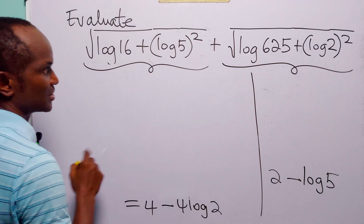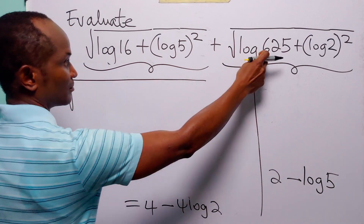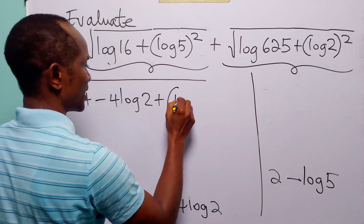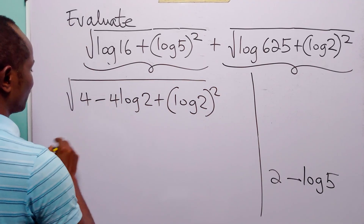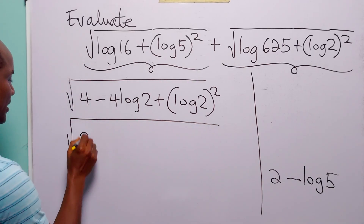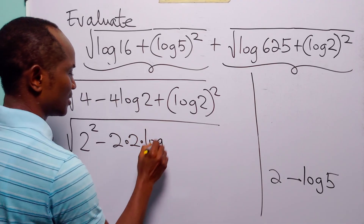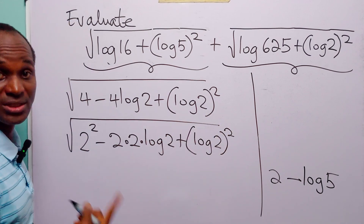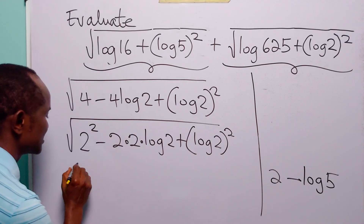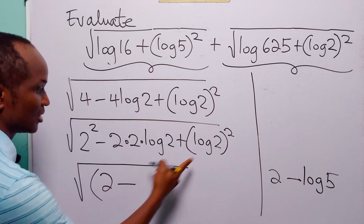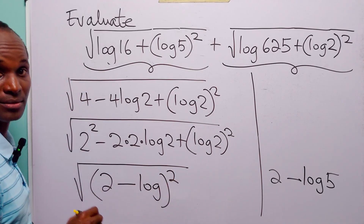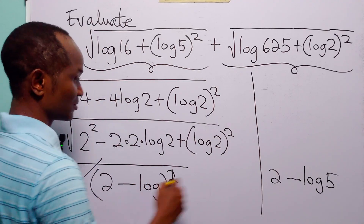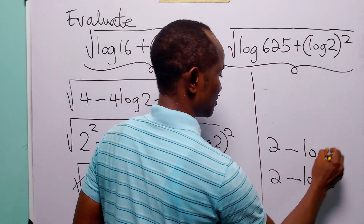Now when we look at this whole square root, we can write it as the square root of 4 minus 4 log 2 plus log 2 squared. This equals 2 squared minus 2 times 2 times log 2 plus log 2 squared. Already you can spot the pattern — this is the square root of (2 minus log 2) squared, which gives us 2 minus log 2.